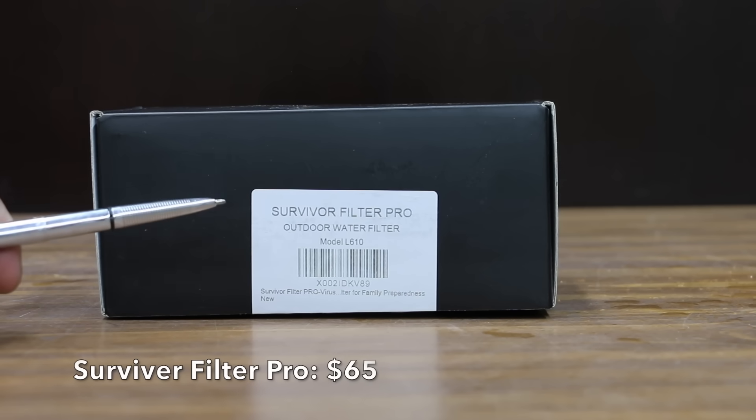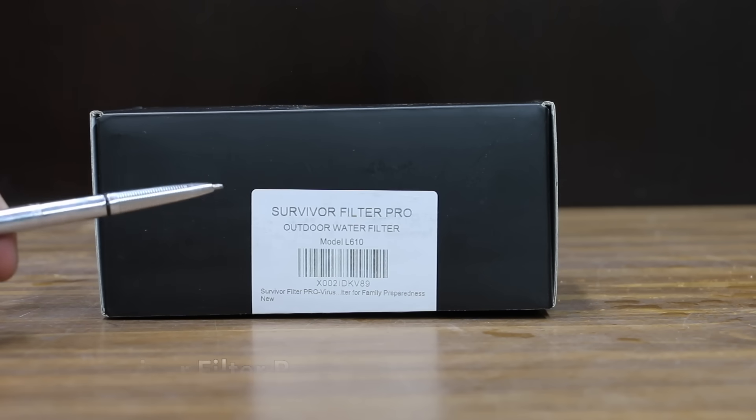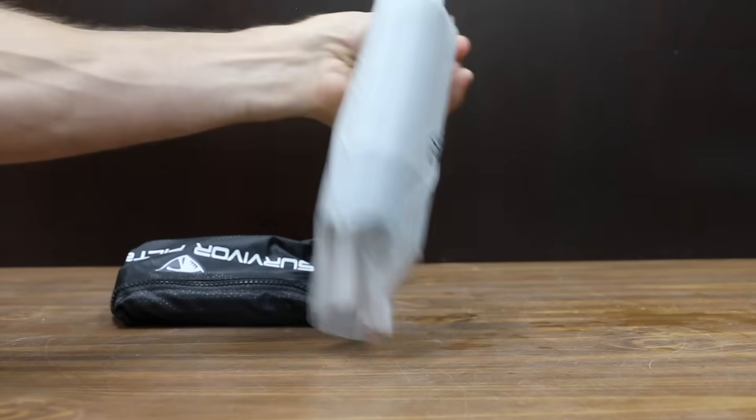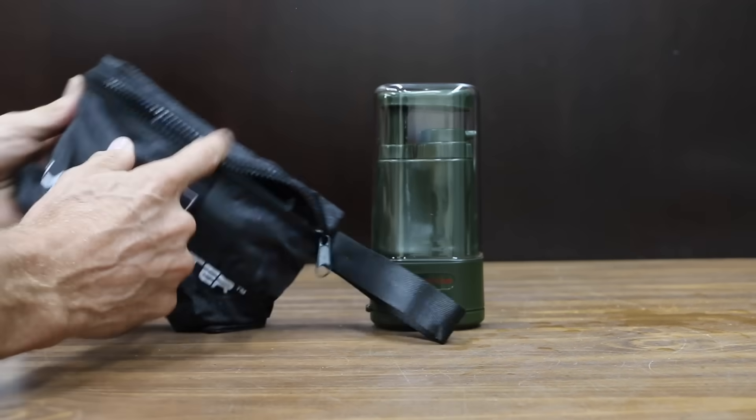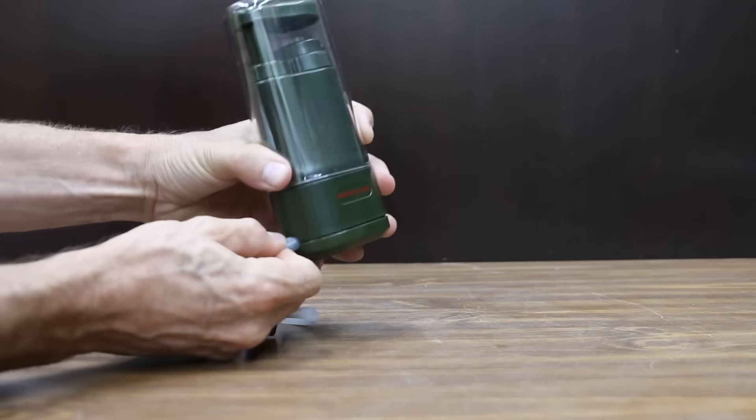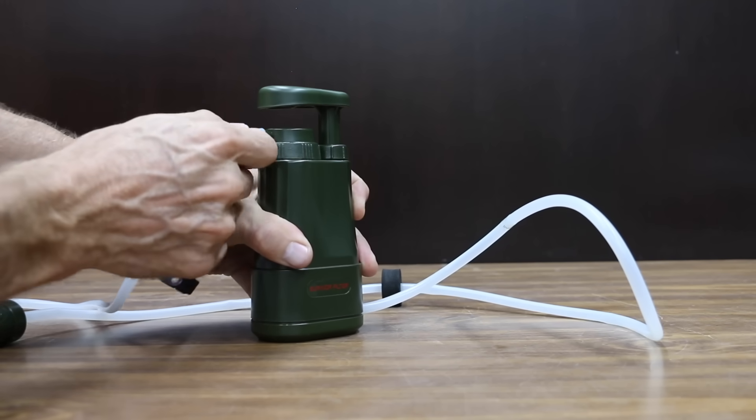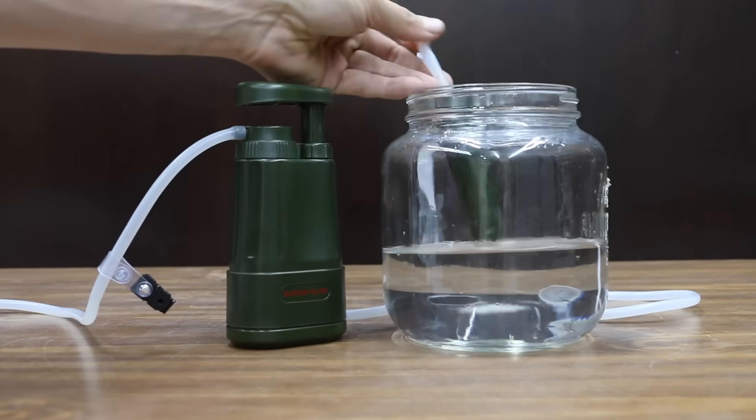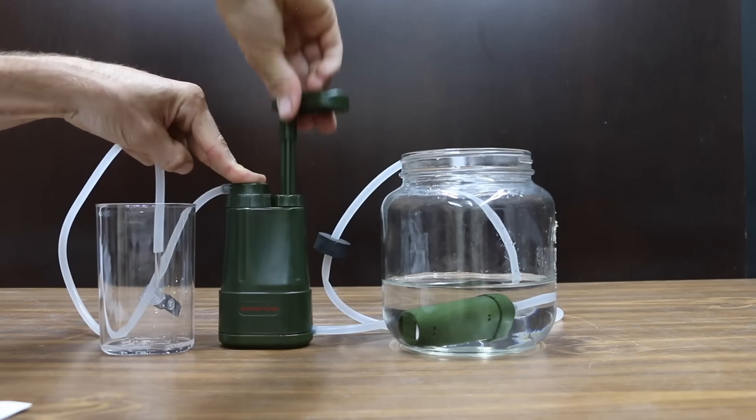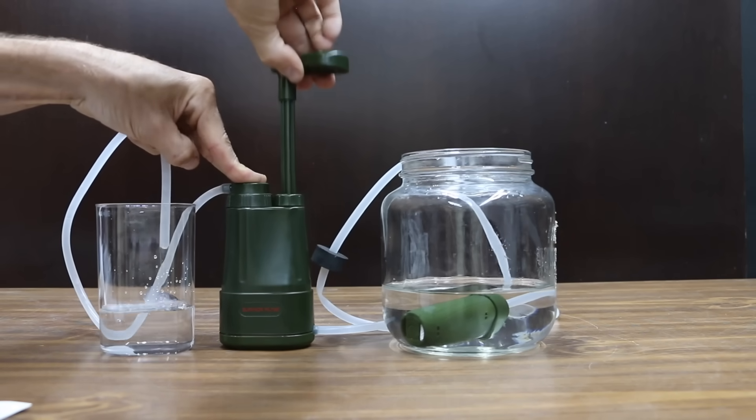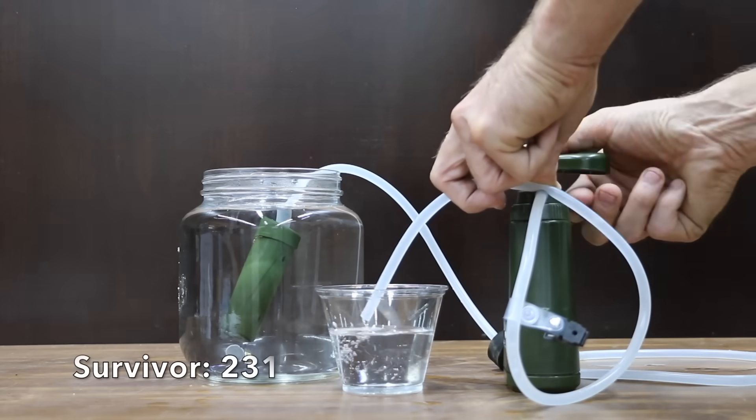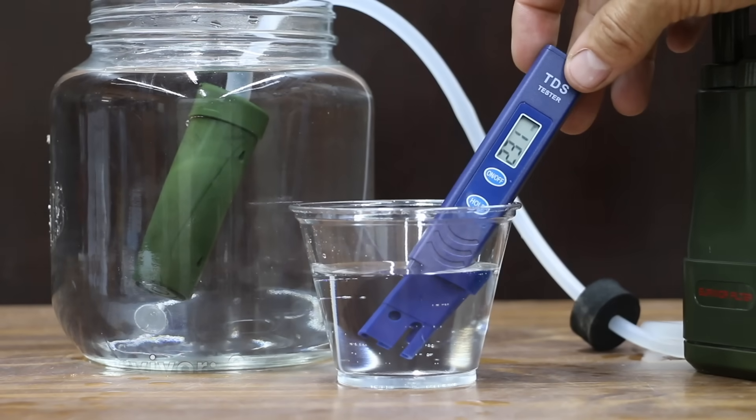At a price of $65 is this Survivor Filter Pro Outdoor Water Filter. It shows 99.999% filtration removal of tested virus, bacteria, parasites, and reduces heavy metals, unpleasant taste, and odors. Connect water inlet hose to water inlet fixture. Connect the water outlet hose to the water outlet fixture. Fully submerge the UF pre-filter in water to be filtered. Hold the housing firmly with one hand and gently raise and lower the pump handle several times to start the water flowing through the Survivor Filter Pro. And the Survivor Filter Pro performed fairly well at 231 parts per million.